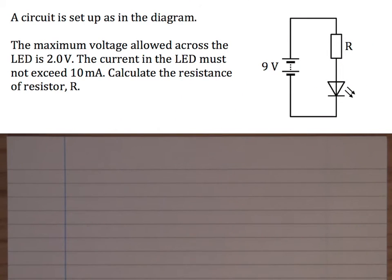Okay, in the second part of the video, I'll be answering this question. A circuit is set up as shown in the diagram. The maximum voltage allowed across the LED is 2.0 volts, and the current in the LED must not exceed 10 milliamps. Calculate the resistance of resistor R. So the important thing is, we're told the maximum current in the LED, and because this is a series circuit, the current will be exactly the same in the resistor. Because in a series circuit, the current is the same at all points.